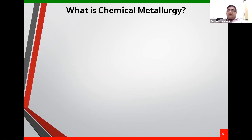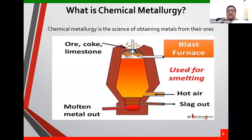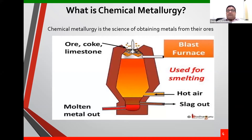Chemical metallurgy is basically taking metal out from the ore. From the earth's crust you take the iron ore or copper ore, do the smelting, convert it into pure copper or pure iron first, then add alloying elements and make an alloy out of it. This particular portion — taking out the metal from the earth's crust and converting it into a usable form — is what is called chemical metallurgy.